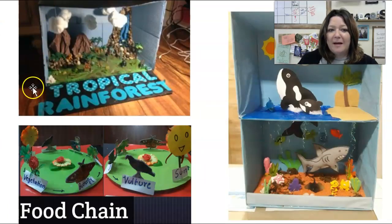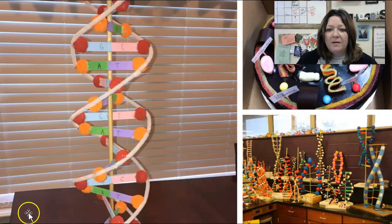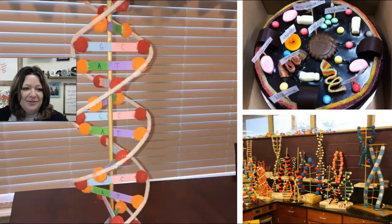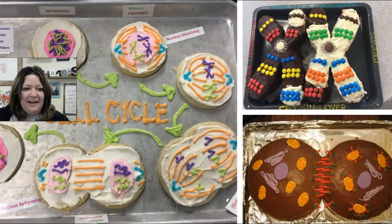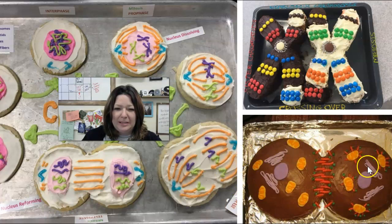These are good old-fashioned dioramas from elementary school where you did something inside of a box. These are biomes, and this is like a spinning food chain. These are more models — DNA modeling. And this is another edible cell. These are a bunch of different methods of making DNA molecules. We've got a mitosis cookie cell cycle thing, some crossing-over cakes showing crossing over for chromosomes, and then cells in a stage of cytokinesis or telophase and cytokinesis of division.